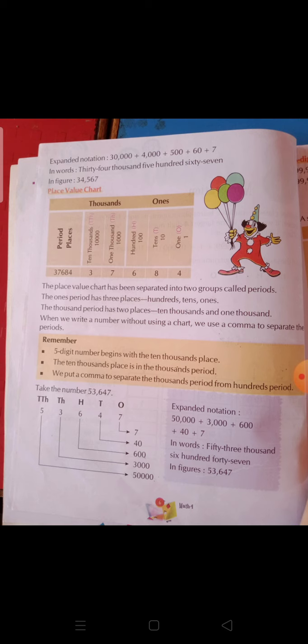Take the number 53,647. In the place value chart we have: ones, tens, hundreds, thousands, and ten thousands. Put the value 7 in ones. Put the value 4 in tens. Put the value 6 in hundreds. Put the value 3 in thousands. And put the value 5 in ten thousands.